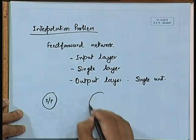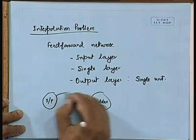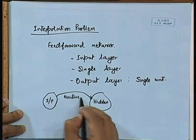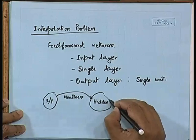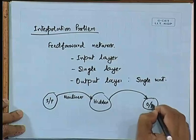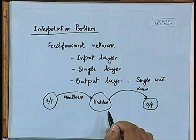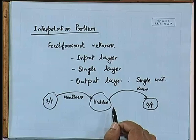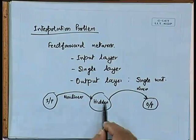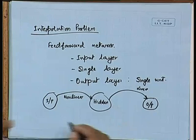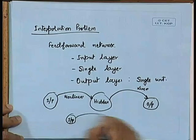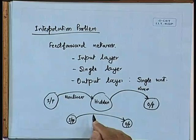This network maps non-linearly from the input space into the hidden space, and then linearly from the hidden space to the output space. In the output, we combine the phi outputs — phi1, phi2, phi3, phi4 — linearly as w1*phi1 + w2*phi2 + ... to generate a linear output. Combined, it is a non-linear mapping from input to output effectively. The input dimensionality is M0, the single hidden layer has M1 neurons, and the output dimension is 1.